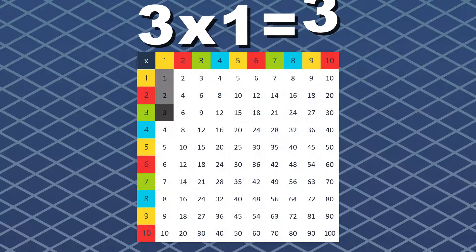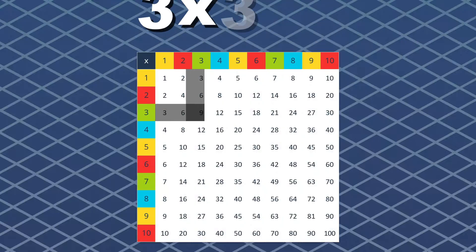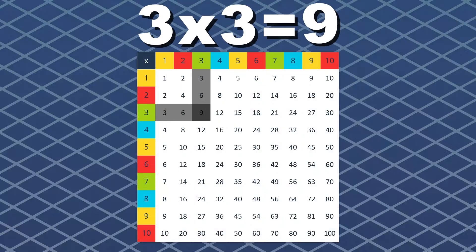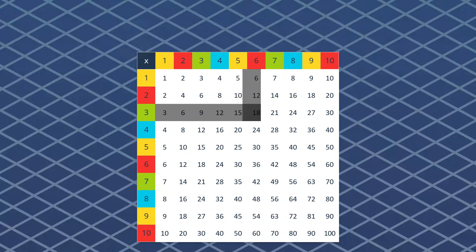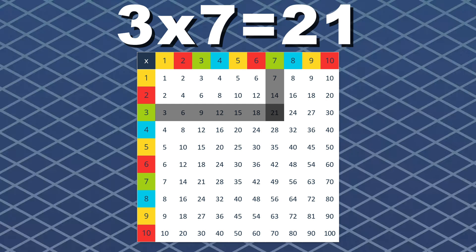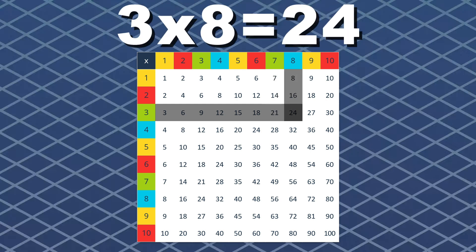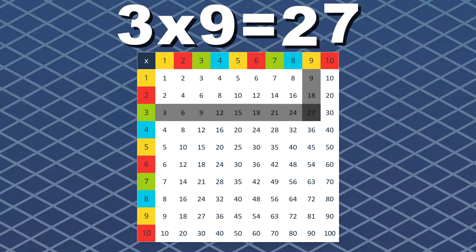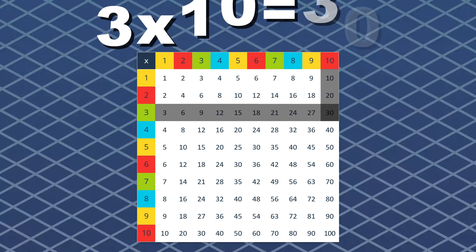This is what you see when multiplying by the number three. Every time you multiply any number by three, you just triple that number. And the answer will be...